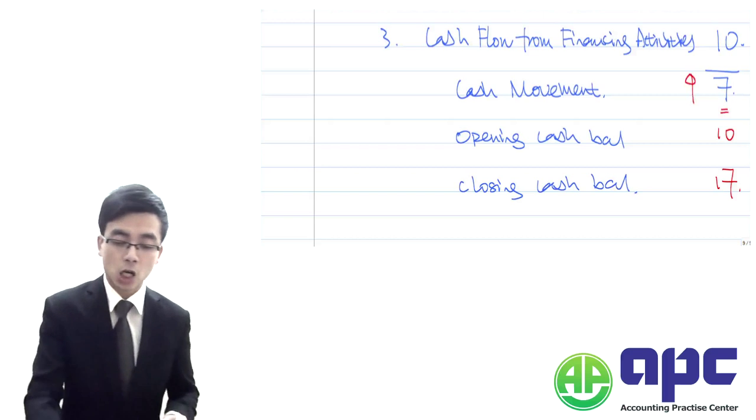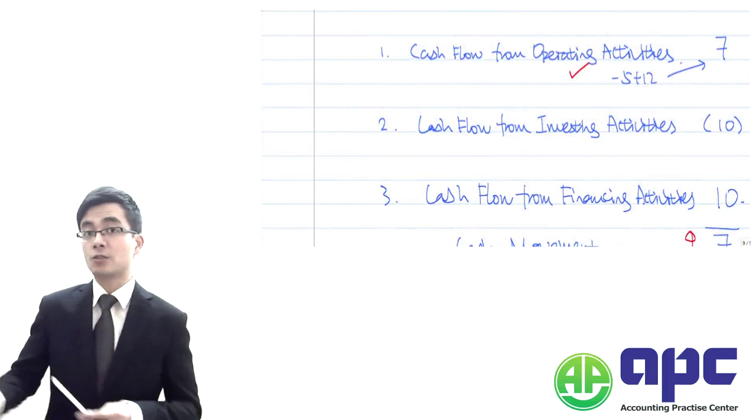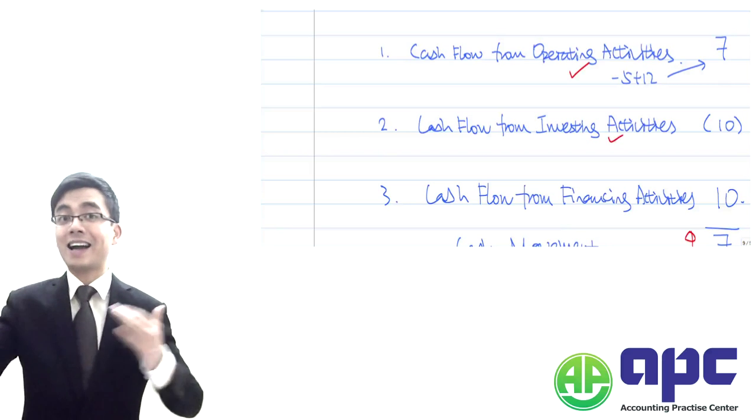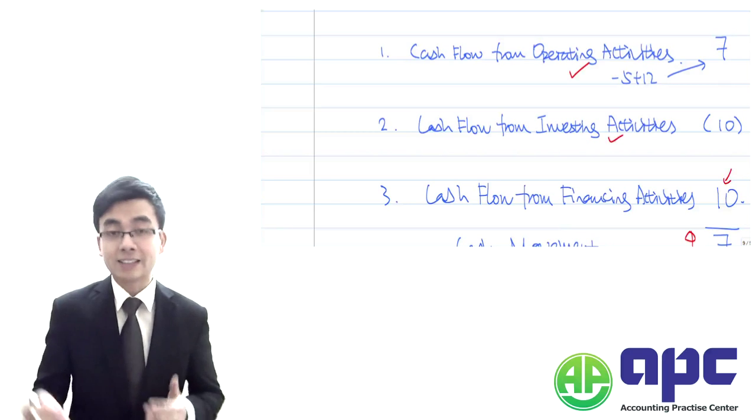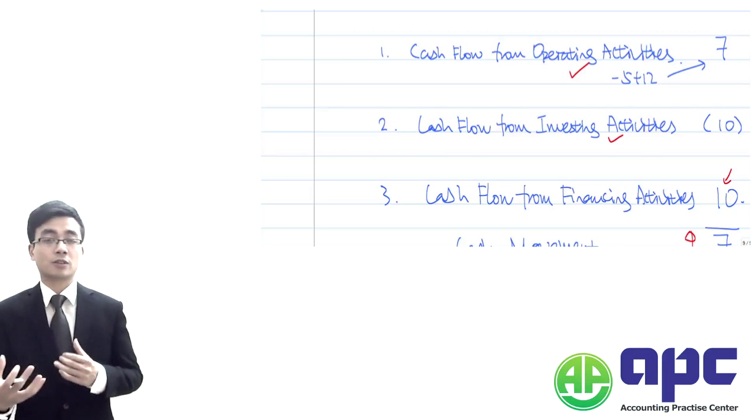Why this is the case is because, firstly, operating activity of 7 in, and investing activity of 10 out, with another 10 in from the financing activity. So netting off together, that would give you 7.